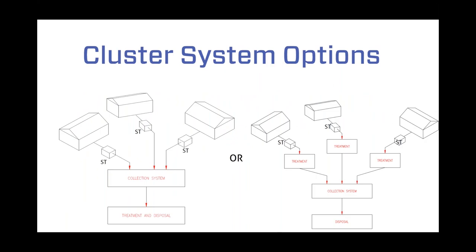Cluster system options — typically we see two different options available. The three houses on the left: pretreatment is done at each home, so each home on each lot will have a septic tank for pretreatment. This partially treated effluent then will flow to a community collection system, and from there it'll flow to a community treatment and final dispersal system. So in this case, only pretreatment is done on each lot.